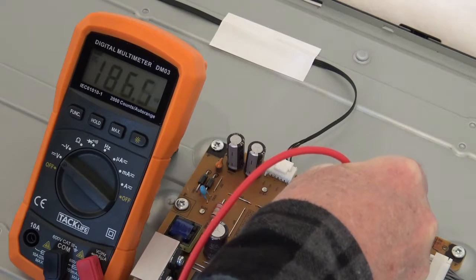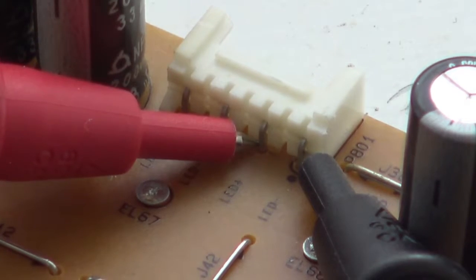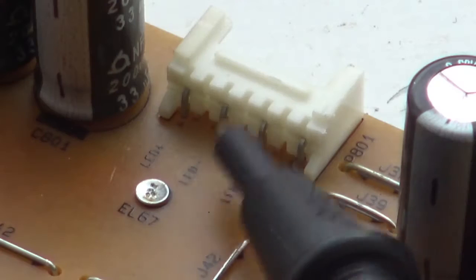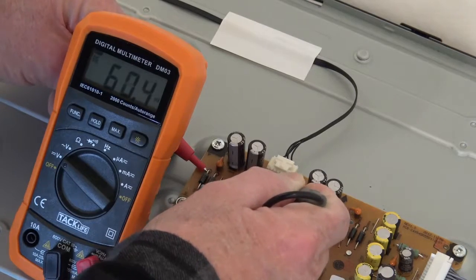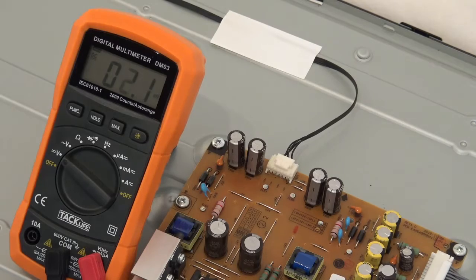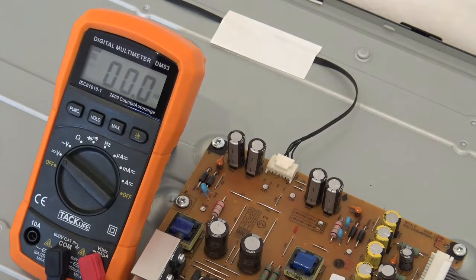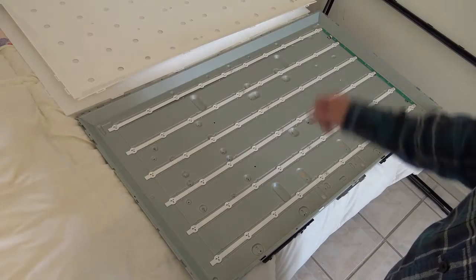Also test this side - 60 volts on that side, which means the strips have failed. Now we have to dismantle the screen. I have carefully removed the screen and panels.